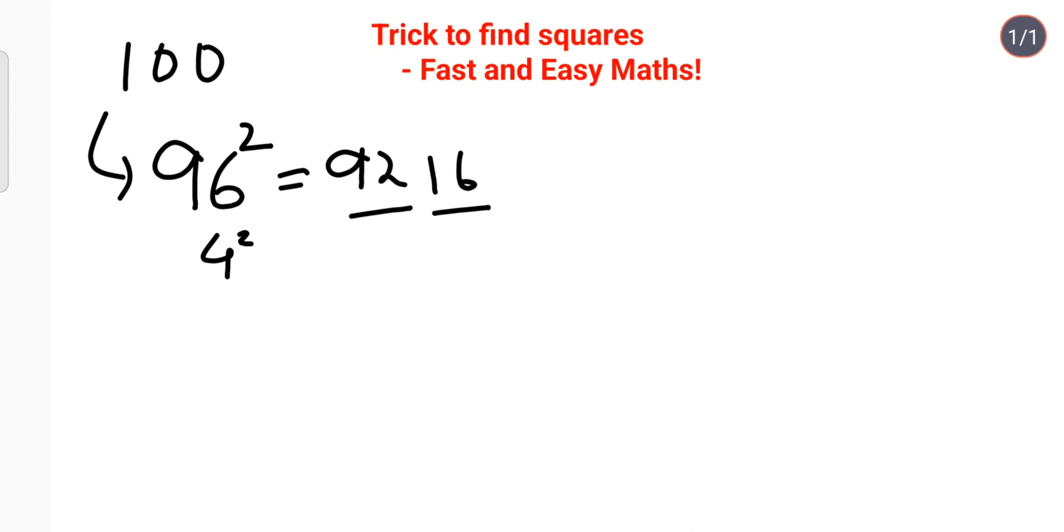Similarly, let's find 92 squared. It's 8 digits away from 100, so we subtract 8 from 92 to get 84. The next part is 8 squared, which is 64. So 92 squared equals 8464. You can see how easy this is, right?